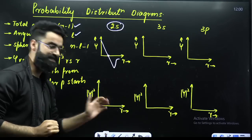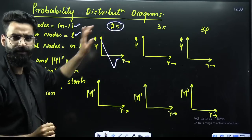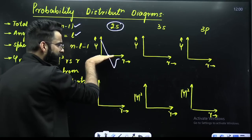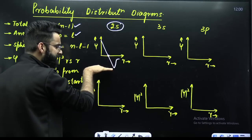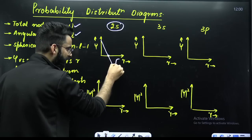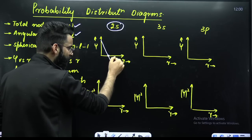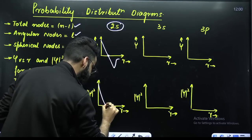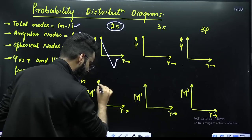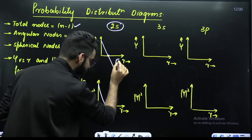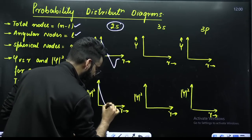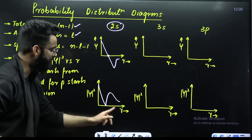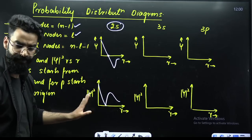For psi squared versus R for the same 2s orbital, the part of the graph that is below the R-axis — take the reflection of it. From here to here the graph is the same, then the reflection of the negative part flips up. This is psi squared versus R in case of 2s.